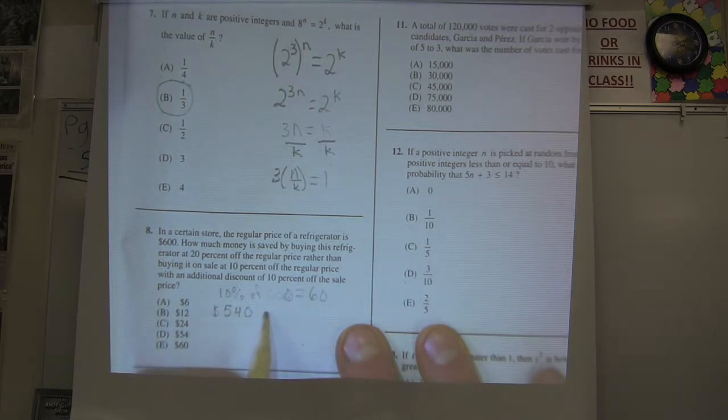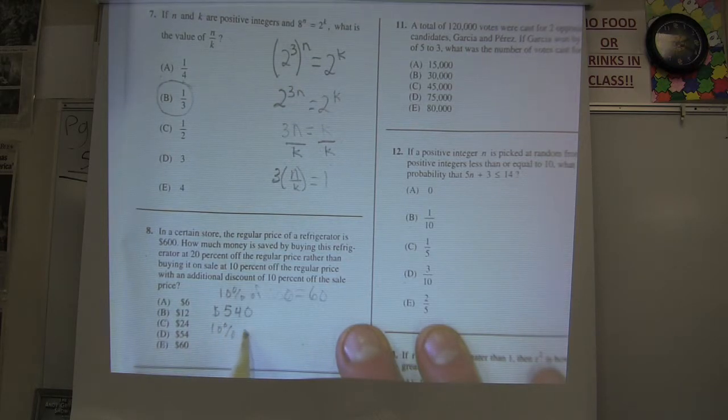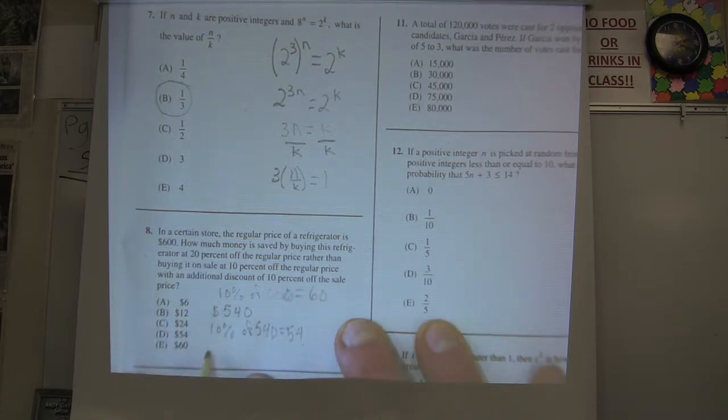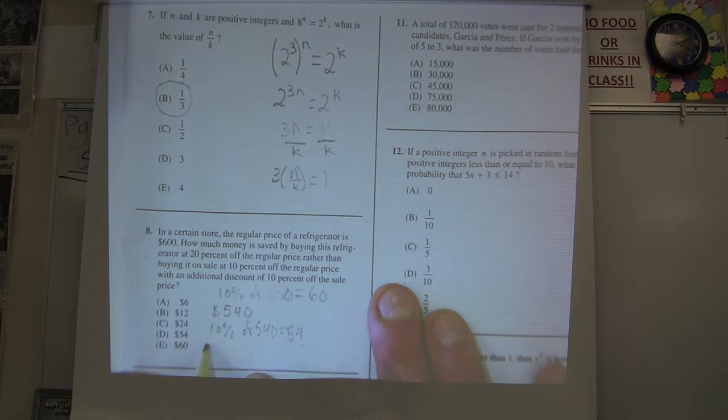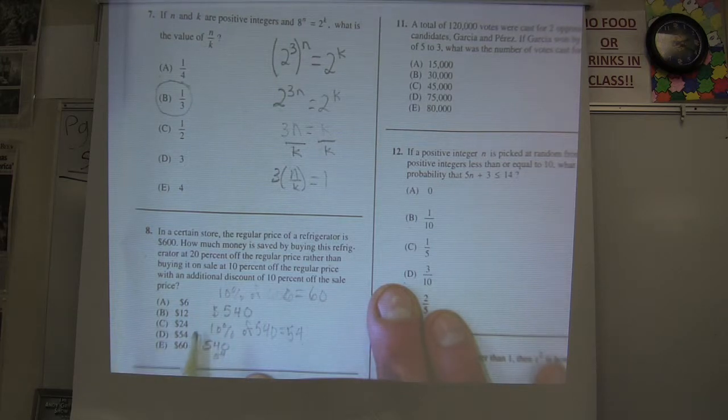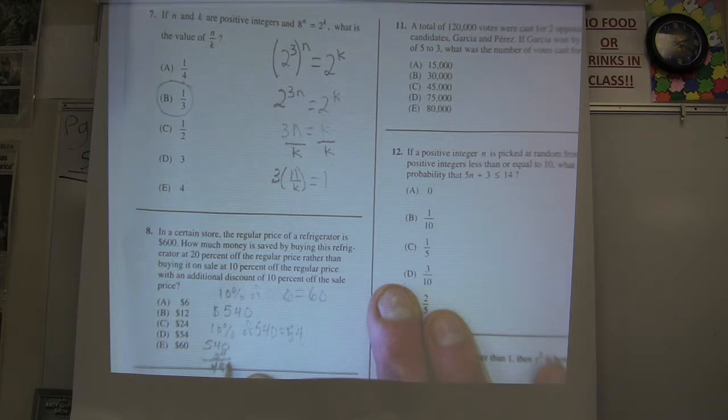So if I get another 10% off of that, well, 10% of 540 is 54. So if I take that away from 540, 540 and I take off 54, I get 486. That's my sale price right there.